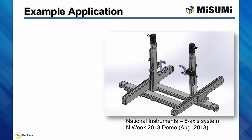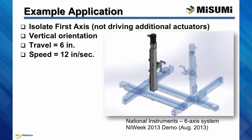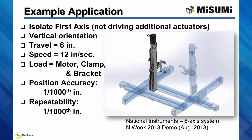In order to help demonstrate the typical application sizing and LX actuator selection process, I'll be walking through the steps using an example application. This system is a 6-actuator, 8-axis demo unit from National Instruments built as a showcase for their NI Week 2013. To begin, isolate the first axis — the actuator which is not supporting any other actuators — and determine the application considerations for that axis. In this example, the actuator is to be in a vertical orientation, moving across 6 inches of stroke at speeds up to 12 inches per second. The load includes a motor, clamp, and mounting bracket, requiring a positioning accuracy of 1/1,000th of an inch with a repeatability of 1/1,000th of an inch as well. The actuator will need to be selected for safety considerations, as well as protecting the mechanism from any medium to large debris or objects.